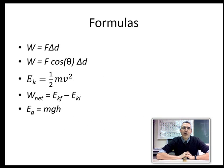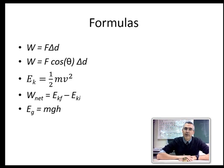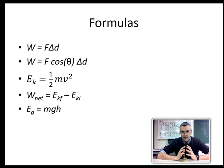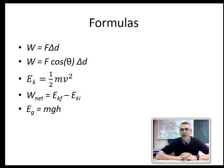Formulas we've seen so far: work is force times distance, or more specifically, work is force in the direction of motion, so F cos θ · d, where cos θ is the angle between the direction of motion and the force. We've seen that kinetic energy is ½mv², and we've seen that the work done by a net force — the sum of all forces — produces a change in kinetic energy. We've also seen that potential energy is mgh.